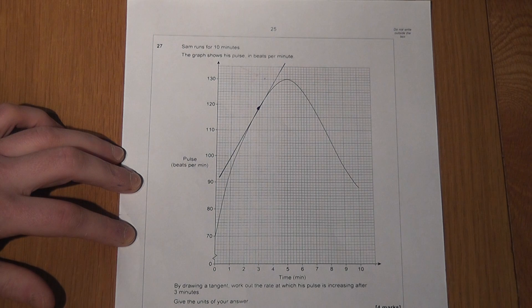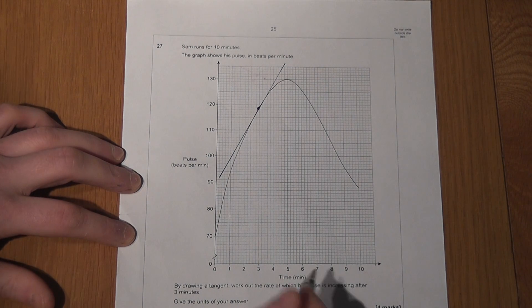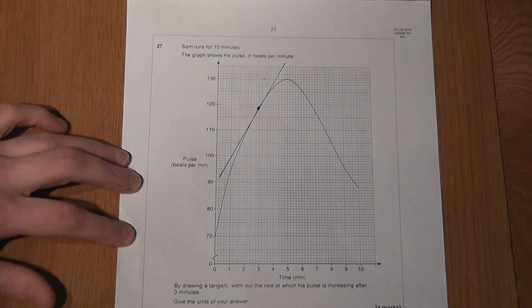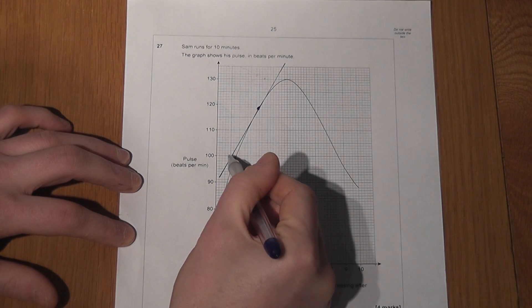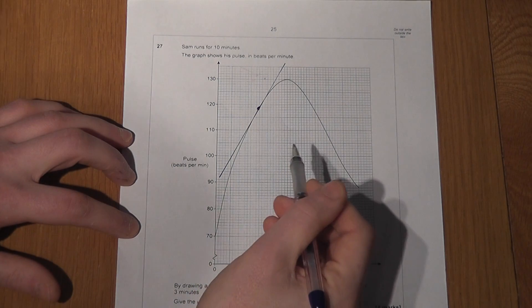I then need to find the gradient. The rate at which it changes is the gradient. And to do this, we have to draw a right-angled triangle underneath the line.